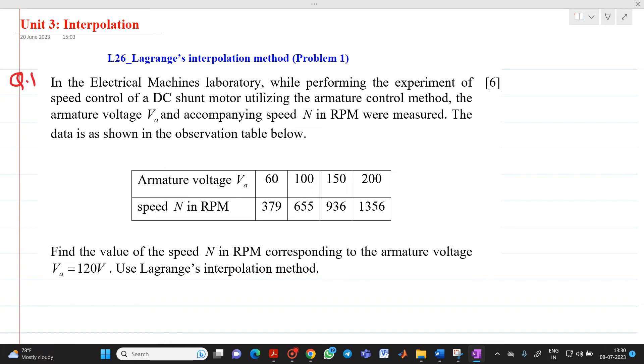In experimentation in an electrical laboratory, while performing the experiment of speed control of a DC motor, utilizing armature control method, we have following readings or observations. Armature voltage VA, speed N in RPM. So, we have data for 60 volt, RPM is 379. For 100 volt, it is 655, like that data has been given.